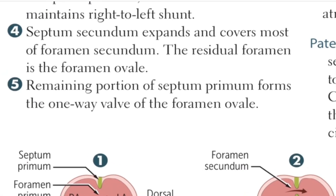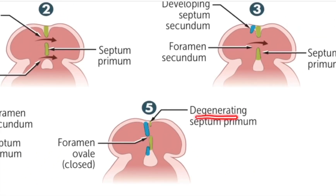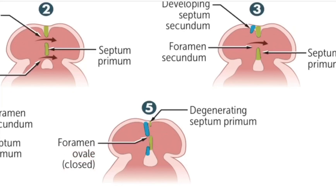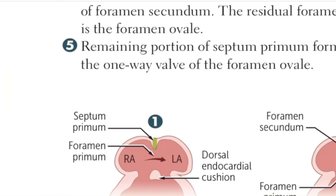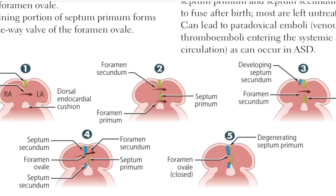In the fifth step, the remaining portion of the septum primum forms the one-way valve of foramen ovale. There is a degeneration of septum primum on the upper side. The foramen ovale closes when the infant takes its first breath. The valve of foramen ovale is formed by the septum primum.